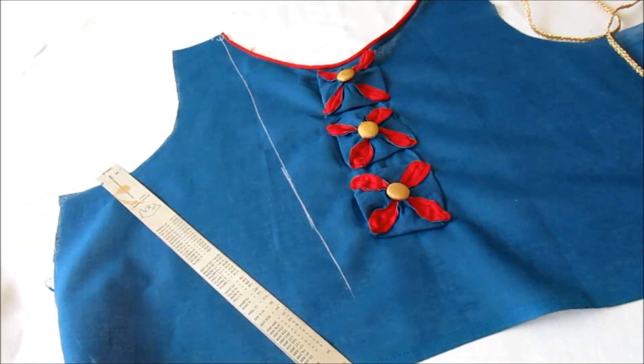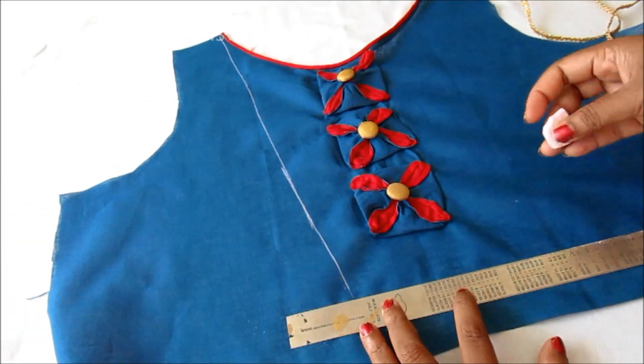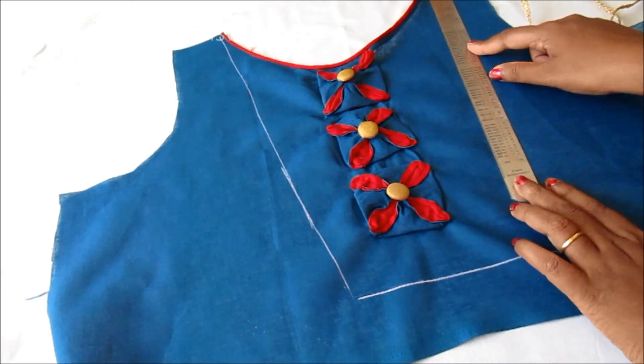Finally, to look most beautiful I'll be joining the gold lace. For which I am giving these markings. On this marking I'll place the lace like this and get the top stitch.